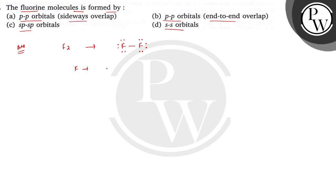If you see the electronic configuration of fluorine, it is 1s² 2s² and 2p⁵. So the electronic configuration here is 2s² and 2p⁵.